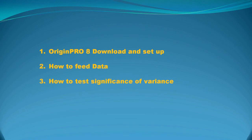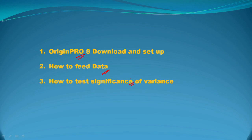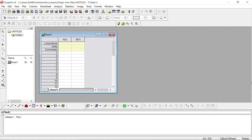First of all, you have to download OriginPro 8, which is the software that we will be using for today's video. Then you have to set up the software. Next, we will see how to feed in the data, and finally we will see how to test the significance of variance.